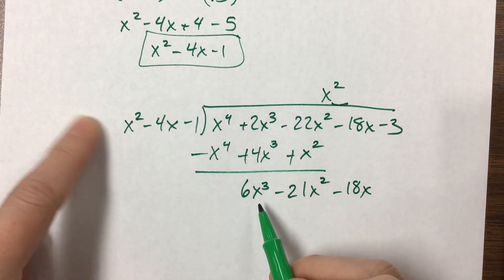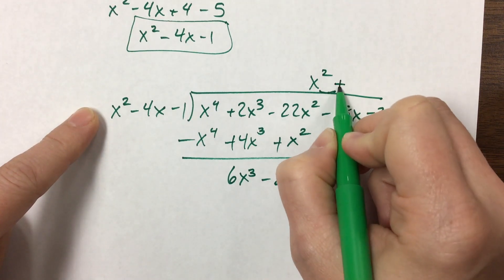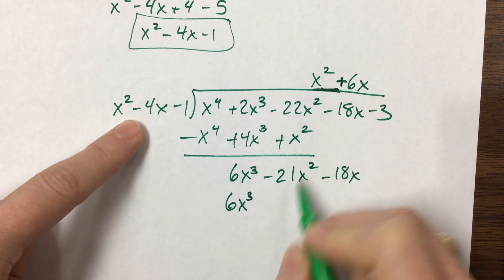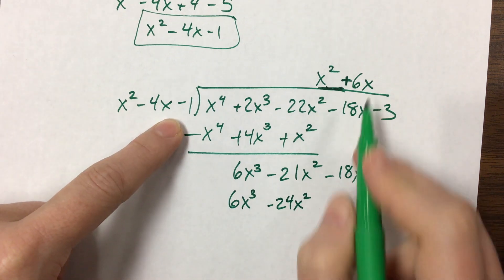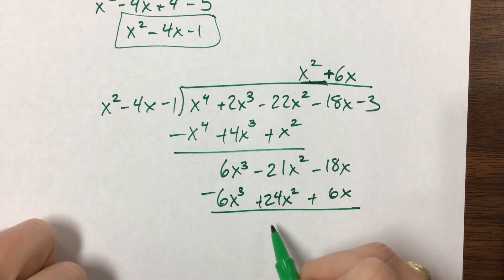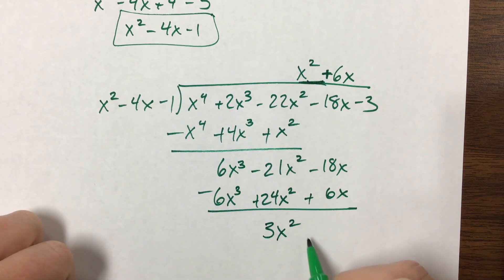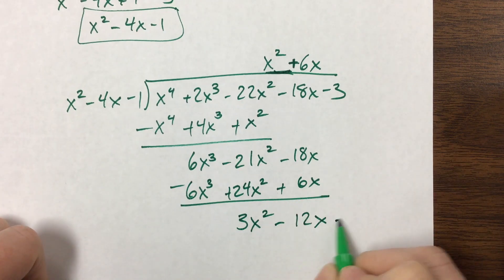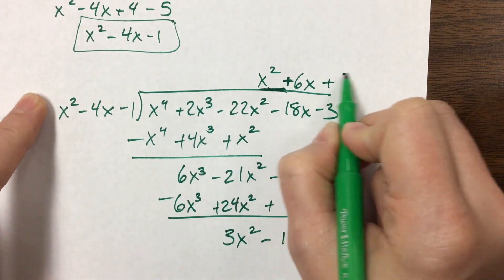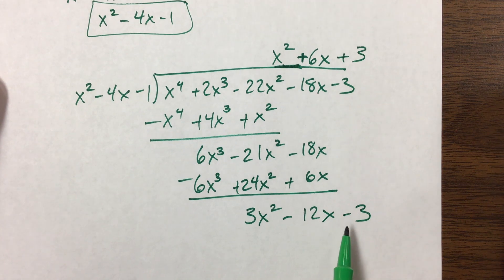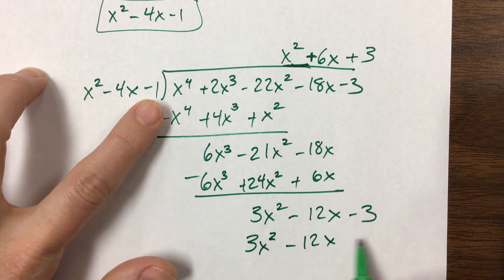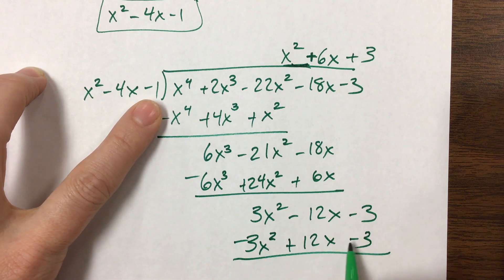Then I have 6x cubed divided by x squared giving me a positive 6x. Multiply that back — minus 24x squared, minus 6x. Change my signs. This becomes 3x squared and then a minus 12x. Bring down that negative 3. 3x squared divided by x squared gives me a positive 3. That gives me 3x squared minus 12x minus 3 — that's fantastic. Change the signs and we're back to 0.